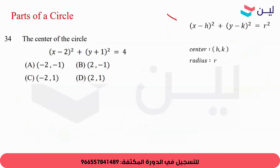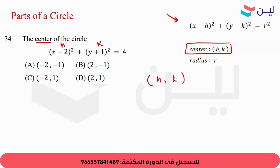Now, still with a circle — this is the general equation of a circle: x minus h squared plus y minus k squared equals the radius squared. The center is (h, k). We take h and k with the opposite sign. So for this question asking for the center: this is h and this is k, but we take them with the opposite side, so the answer is (2, negative 1).